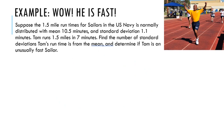Let's talk through an example using a z-score. Suppose the 1.5 mile run times for sailors in the U.S. Navy is normally distributed with mean 10.5 minutes and standard deviation 1.1 minutes. Tom runs 1.5 miles in 7 minutes. Find the number of standard deviations Tom's run time is from the mean — basically, find the z-score for Tom's run time — and determine if Tom is an unusually fast sailor.